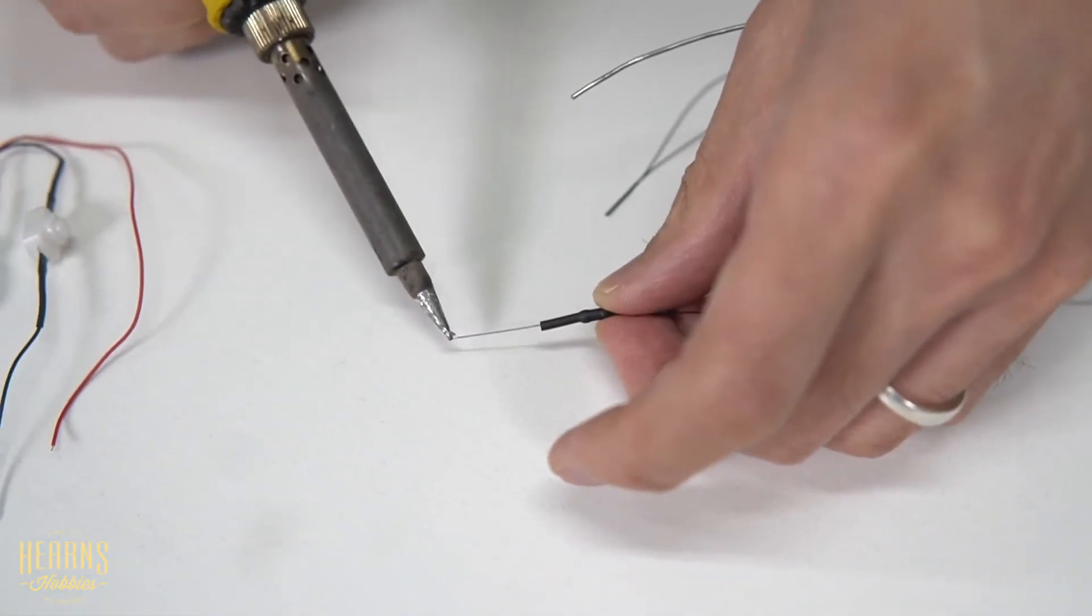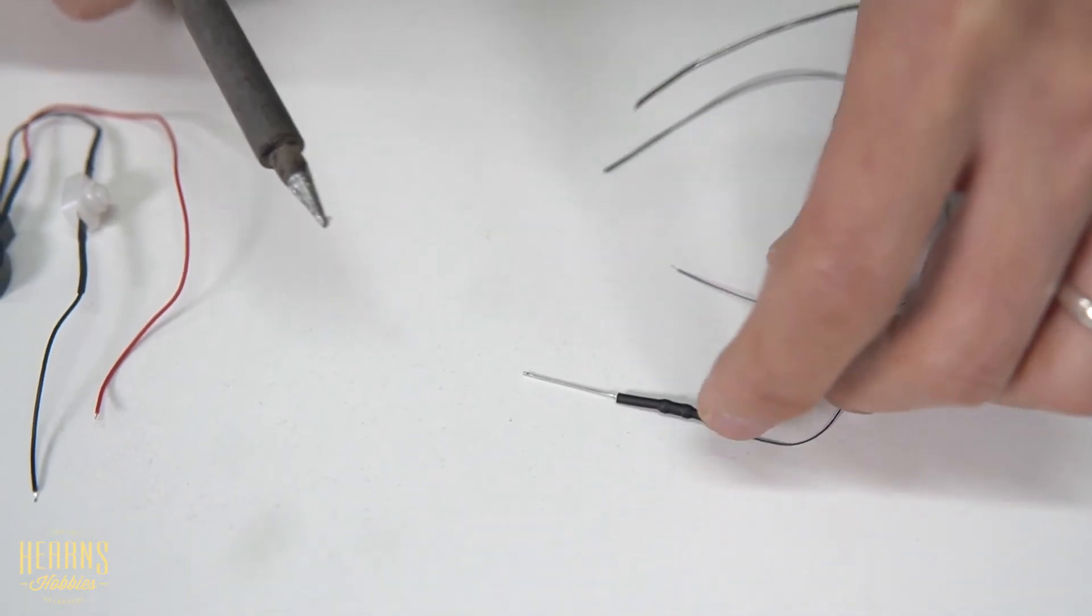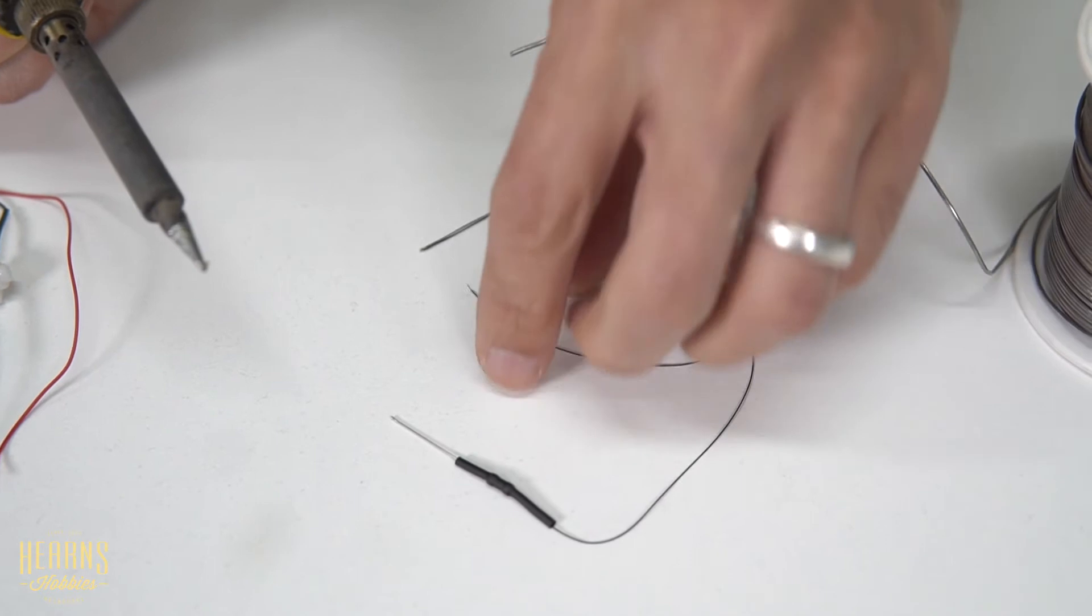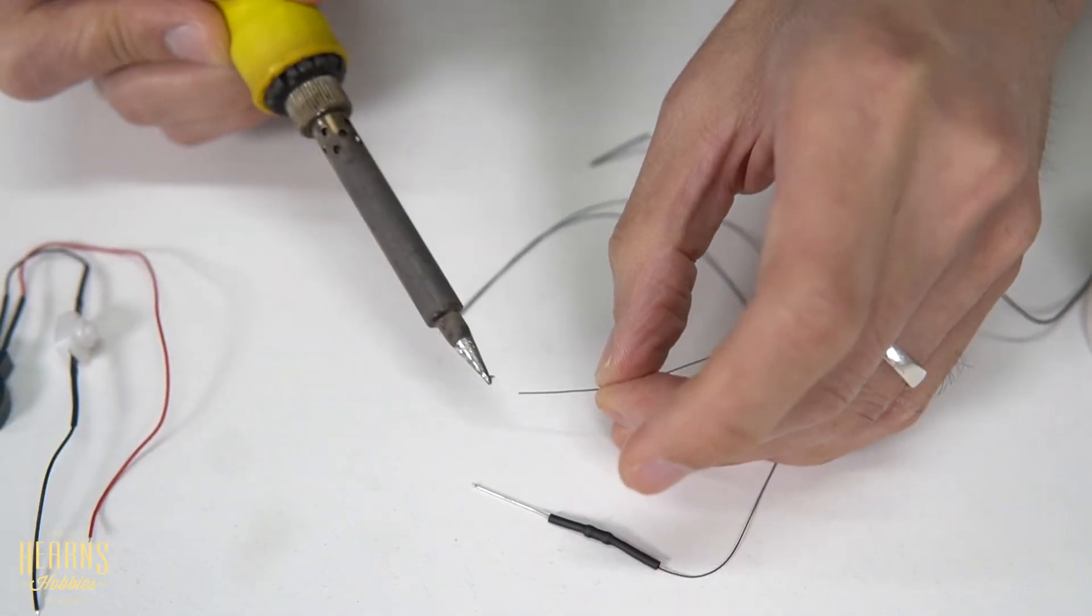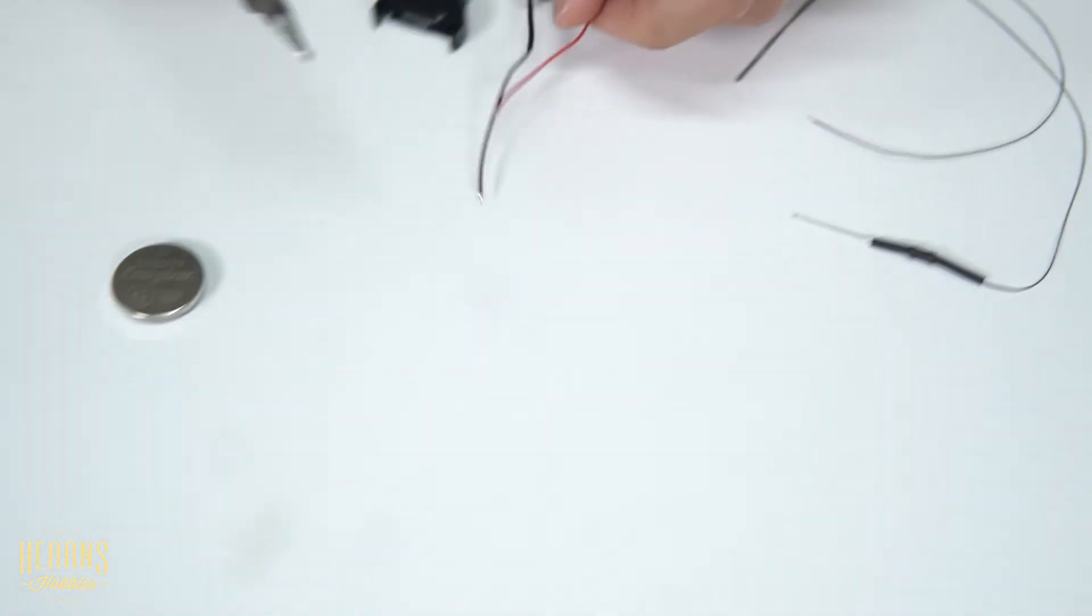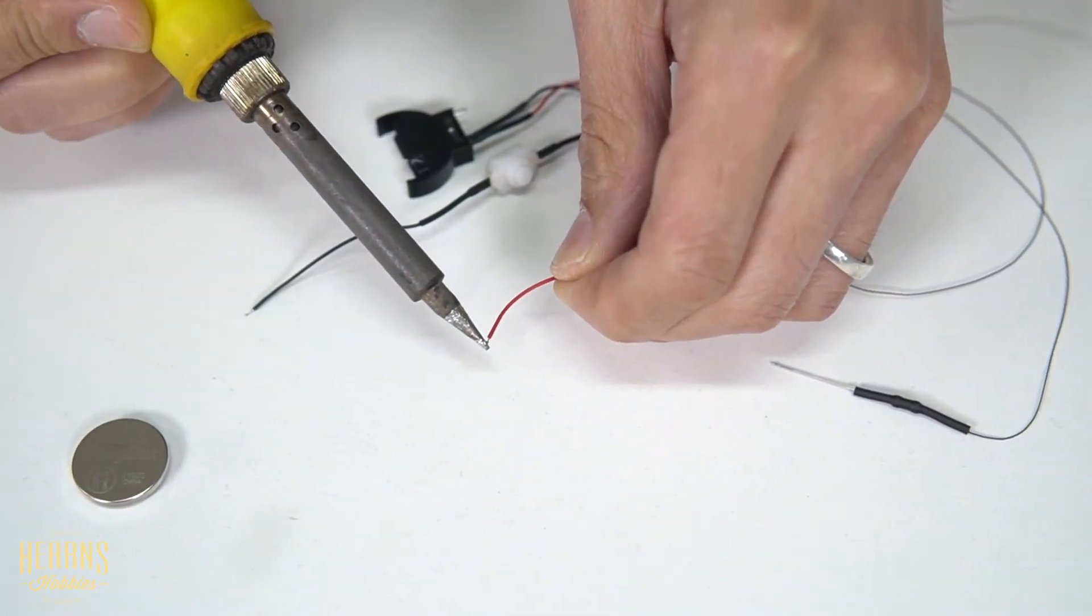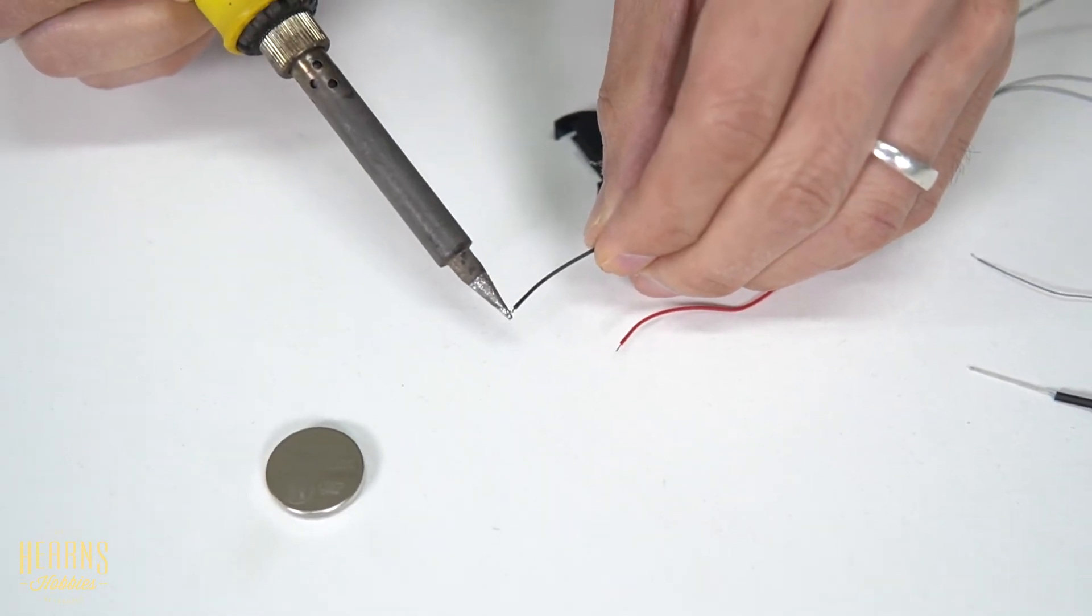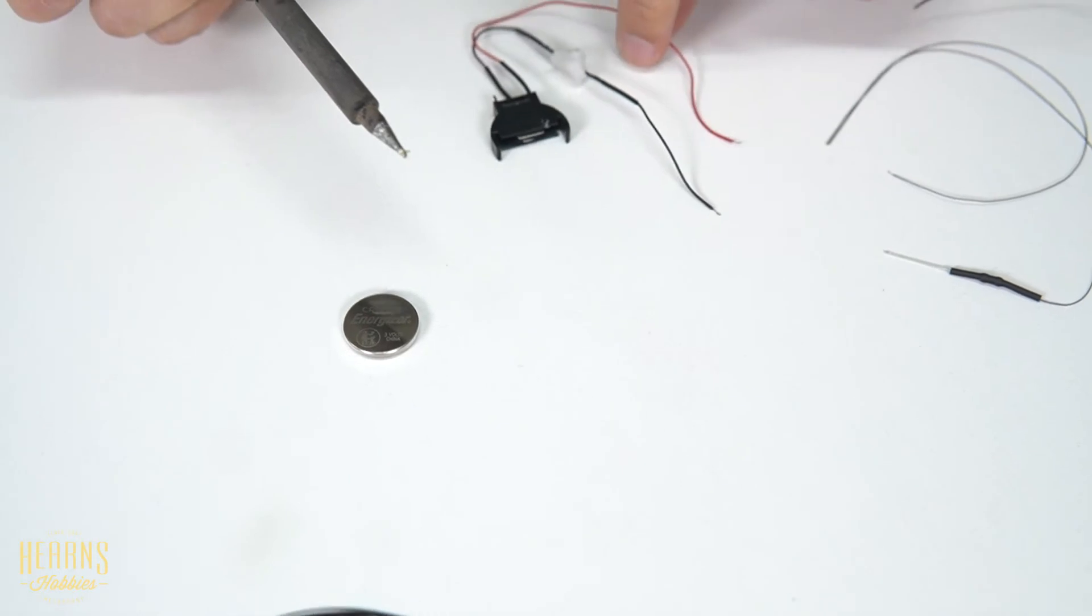Tinning is basically just putting a little bit of solder on each bit of wire. This just helps it all join together when we heat them. I've done that on the end of the resistor, and then we'll do the same with the harness here. Basically each bit of this wire is coated with a thin bit of solder.